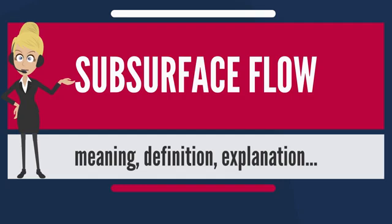Mainly, water flows through the ground which leads to the ocean where the cycle begins again. Flow within the soil body may take place under unsaturated conditions, but faster subsurface flow is associated with localized soil saturation.